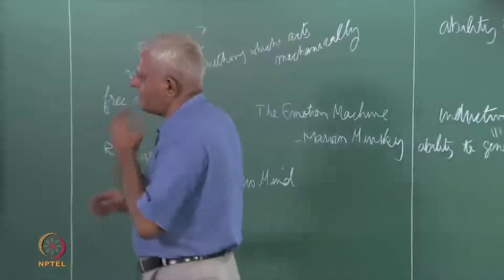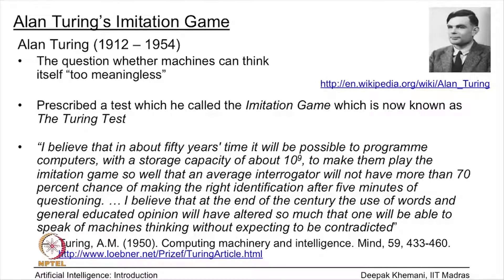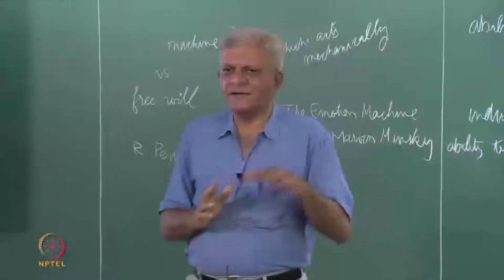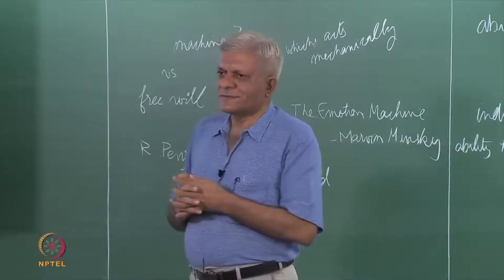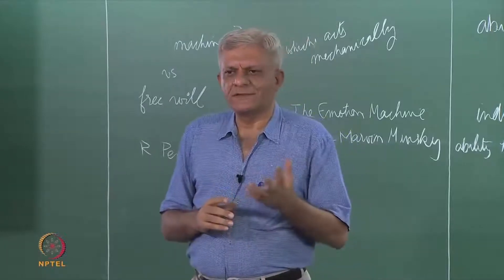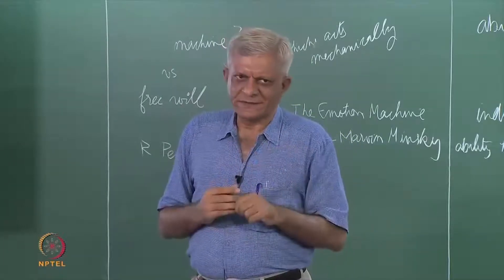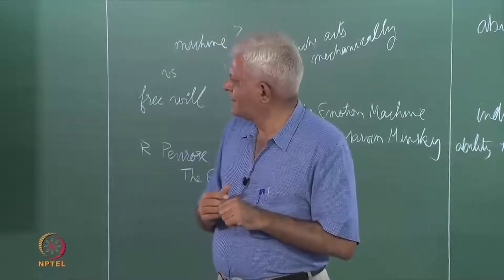Turing felt — and this was in 1950, when he wrote the paper called 'Computing Machinery and Intelligence,' available on the web — that in about 50 years' time, by the year 2000, it would be possible to program computers with a storage capacity of 10 to the power 9. He thought 10^9 was a big number — history is replete with such examples. Bill Gates apparently once said, 'Who on earth will need memory more than 64K?'